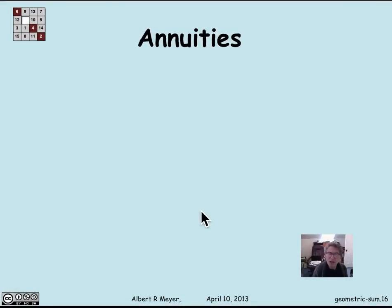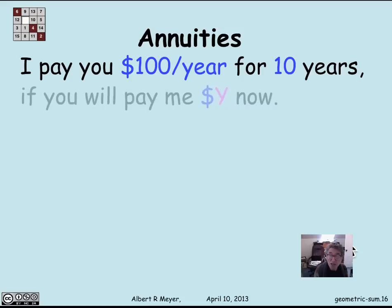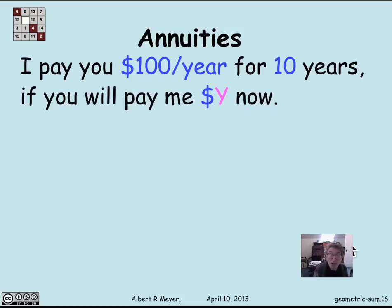Let's think about annuities. An annuity is a contract people buy to provide income for themselves without risk. They make a deal with an insurance company, paying a certain amount now, and the insurance company promises a regular income — sometimes for life, sometimes for a fixed period. For example: I will pay you $100 a year for 10 years if you pay me a fixed premium now. As the insurance company, I want you to pay me a premium of Y dollars now. How much should you pay?